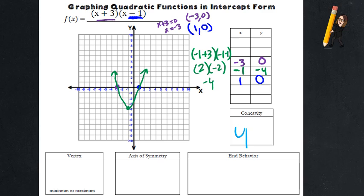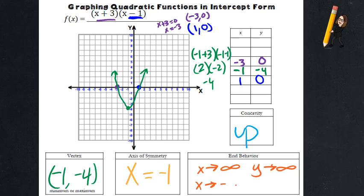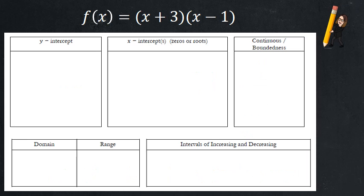So key things: concavity up. That's easy. Vertex, we just figured it out. Negative one, negative four. The symmetry is going to be in the middle, or your x value of your vertex. End behavior. As x is going to the right, the y is going up. As the x value is going to the left, the y value is still going up.